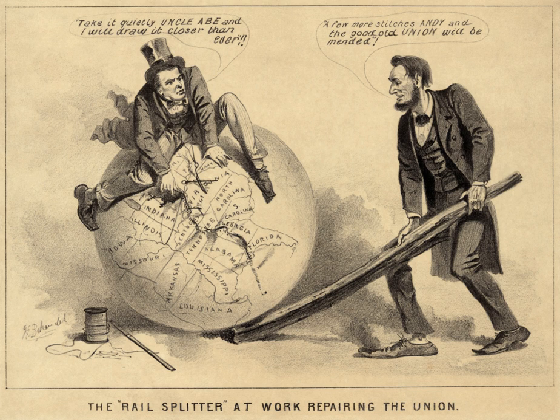The Thirteenth Amendment to the United States Constitution abolished slavery and involuntary servitude, except as punishment for a crime. It was passed by the U.S. Senate on April 8, 1864, and, after one unsuccessful vote and extensive legislative maneuvering by the Lincoln administration, the House followed suit on January 31, 1865.